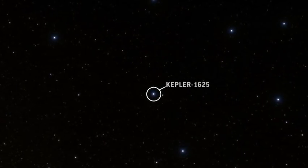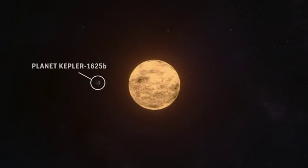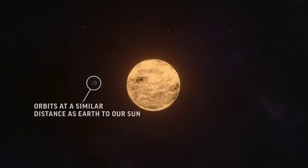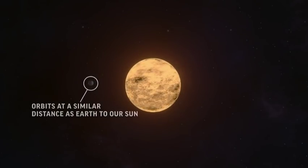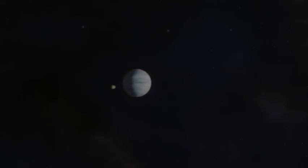Kepler 1625 is a sun-mass star with one known planet around it which is about the size of Jupiter, and it orbits at a similar distance that the Earth orbits around the sun. We think around this Jupiter-sized planet is a Neptune-sized moon.